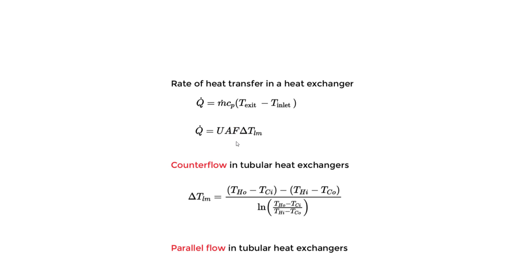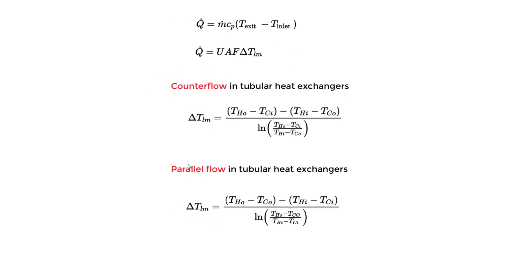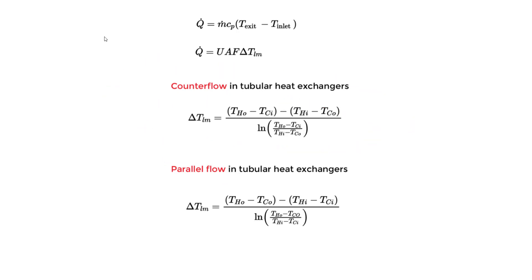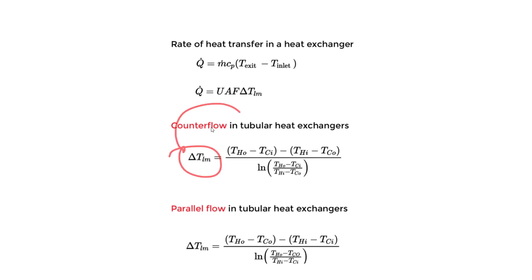The correction factor F depends on the tube arrangement, particularly for shell-and-tube heat exchangers. We assume F = 1 here as noted in the handbook. A is what we're finding, U is known, and ΔT_LM is the log mean temperature difference, which we still need to find. The handbook gives separate counter flow and parallel flow equations for ΔT_LM, so we'll use the counter flow equation, then solve for A.